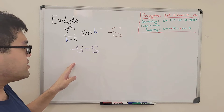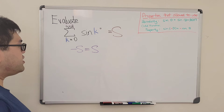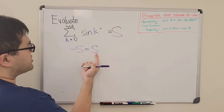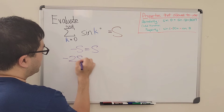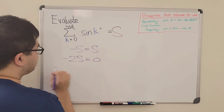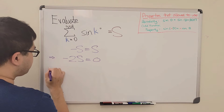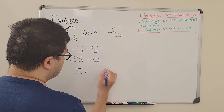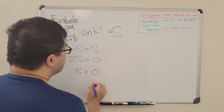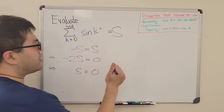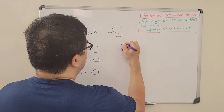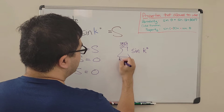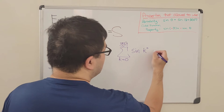We can solve for S through algebra. Subtracting S from both sides gives negative 2S equals 0. Dividing both sides by negative 2, we get S equals 0. Therefore, the sum of sine of k degrees for k from 0 to 359 is equal to zero.